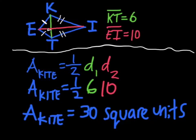In our problem, diagonal 1 is 6 units, so I plug that in. Diagonal 2 is 10 units. I plug that in as well. Basically, I'm just filling in the blanks to the formula and then calculating it out.